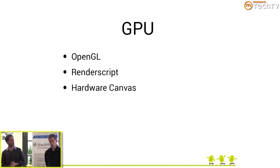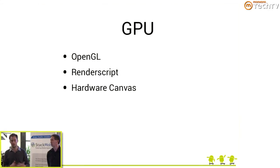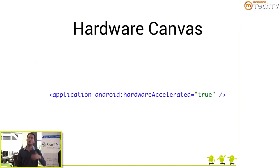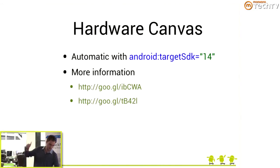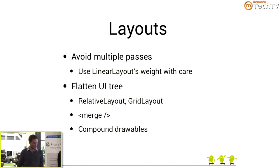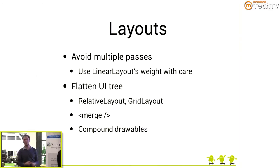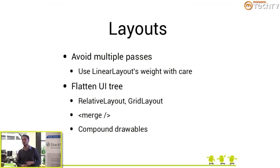Use the GPU if you can. You can use OpenGL, RenderScript, or the Hardware Canvas. The Hardware Canvas is the new rendering pipeline in Honeycomb — you opt in with a simple attribute on your application tag. You have control per window, per activity, and can disable it on views. If you use Target SDK version 14, it's the same. For layouts, try to avoid deep trees. The deeper the tree, the more work the framework does. Solutions include using RelativeLayout, GridLayout, the Merge tag, and Compound Drawables.